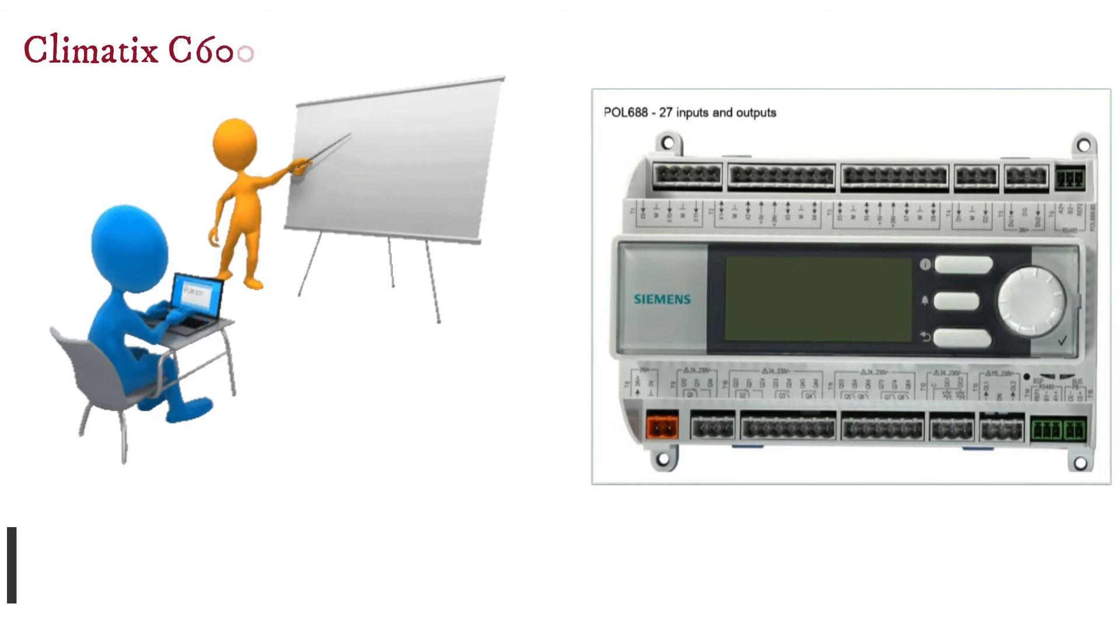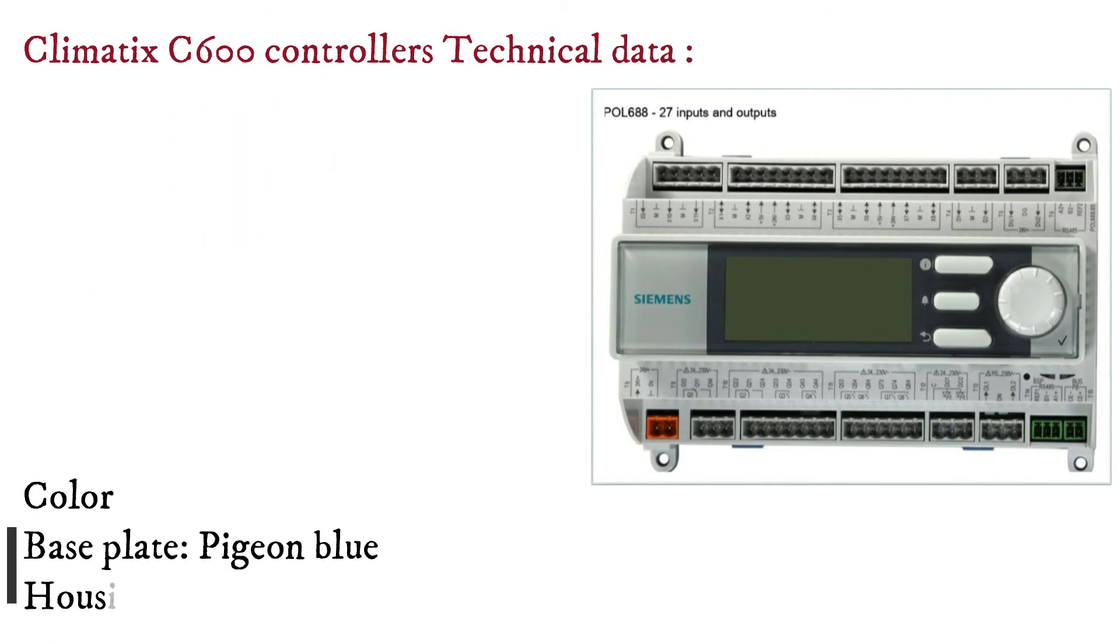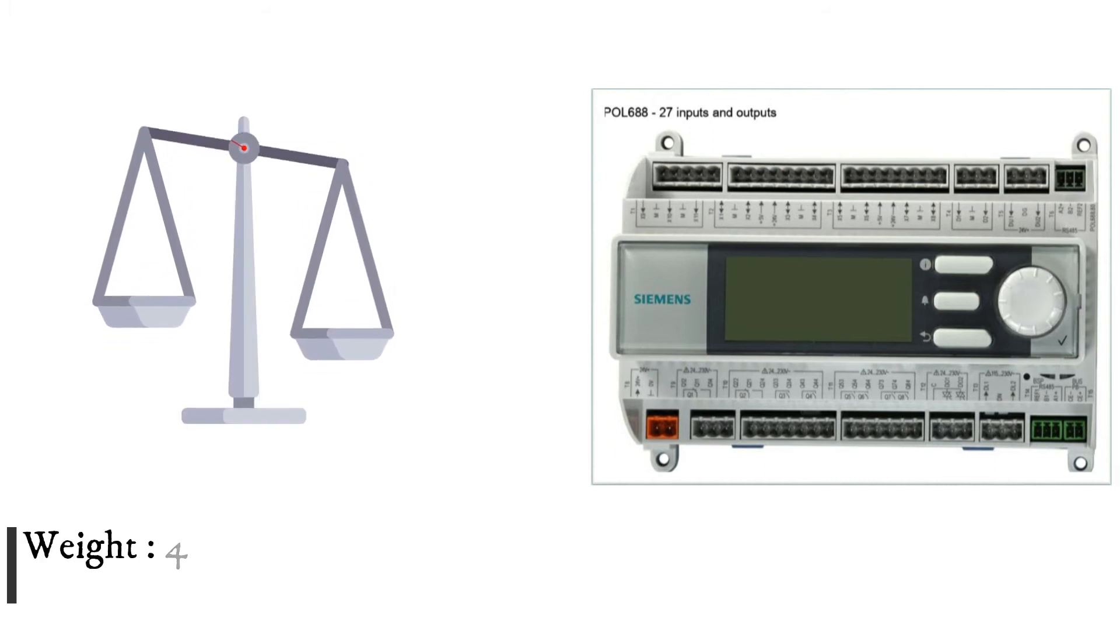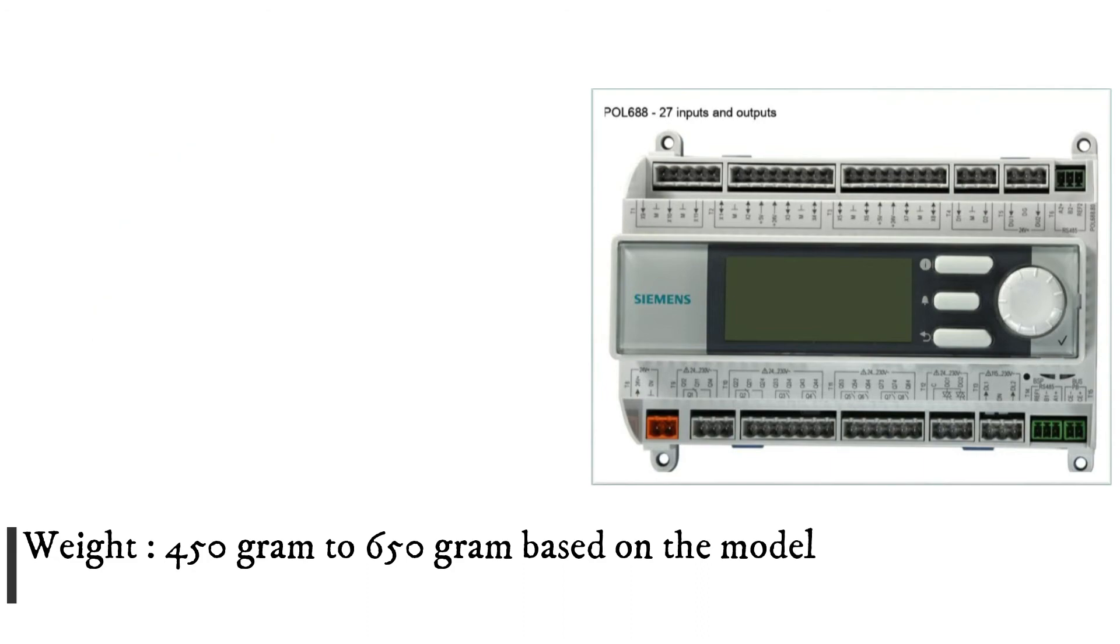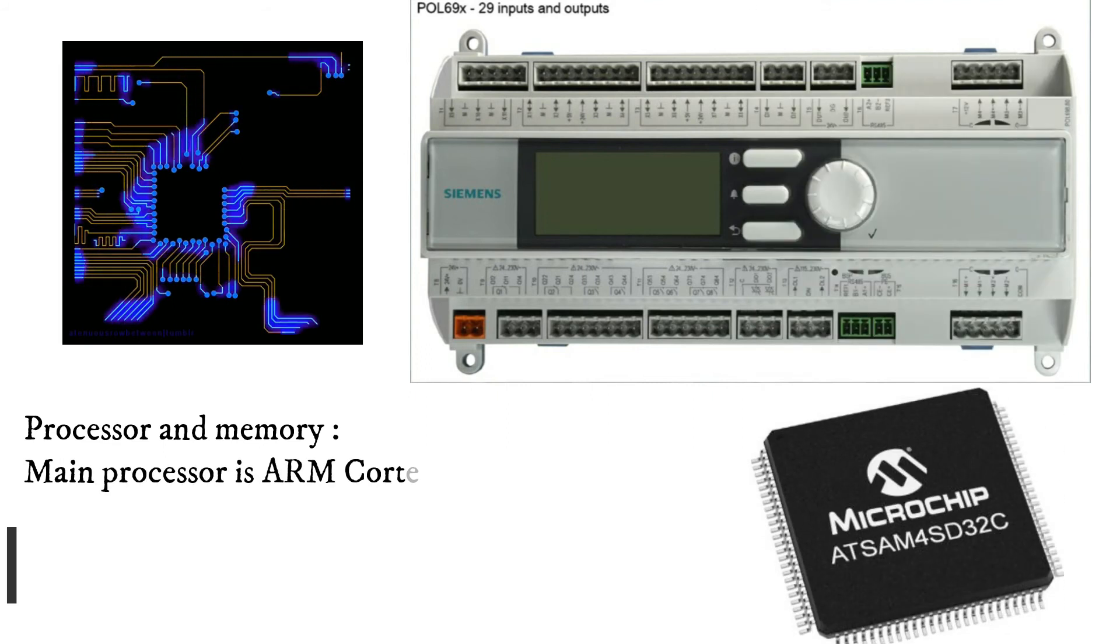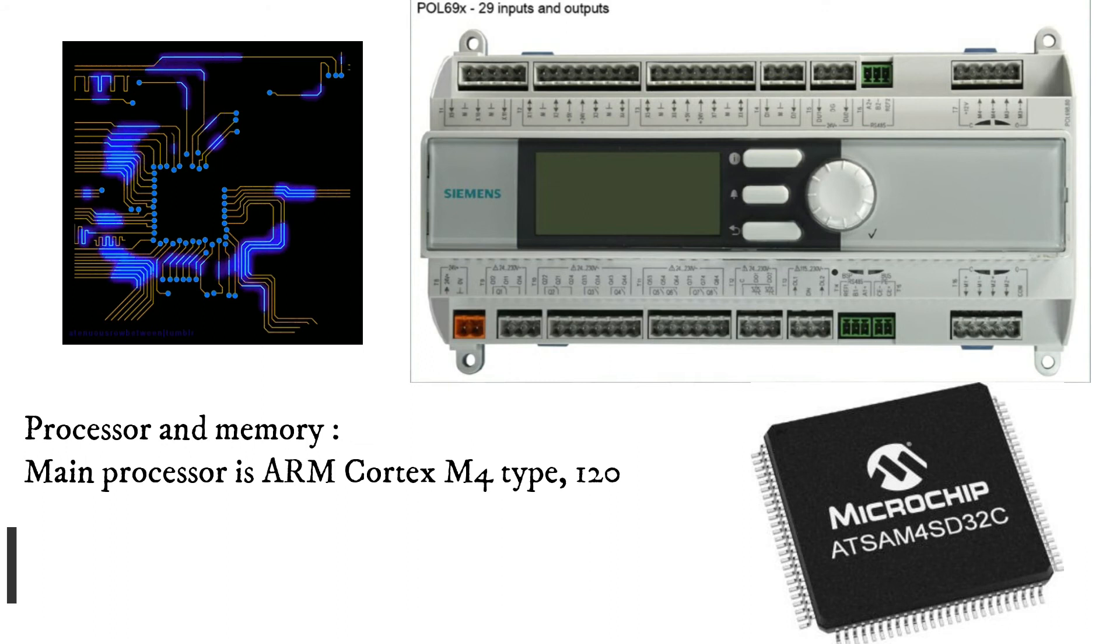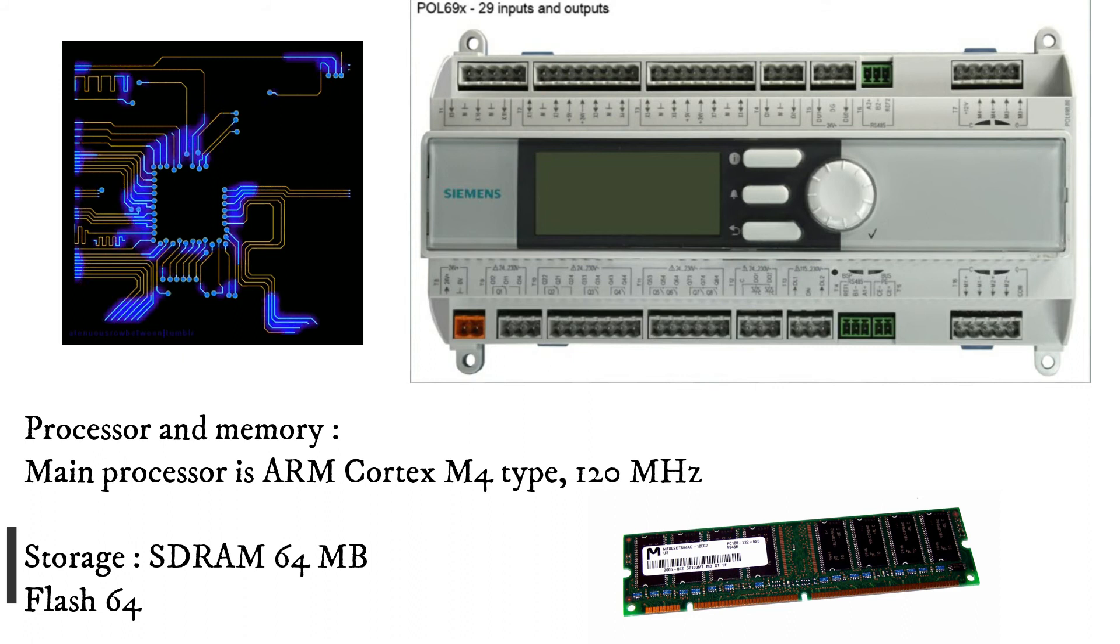Climatix C600 controllers technical data: Color - base plate pigeon blue, housing light gray. Weight: 450g to 650g based on the model. Processor and memory: Main processor is ARM Cortex M4 type, 120 MHz. Storage: SDRAM 64MB, Flash 64MB.